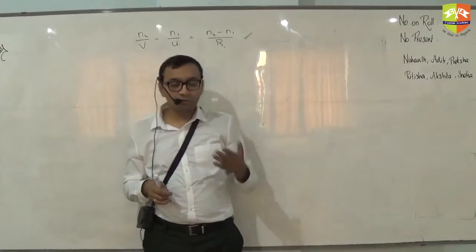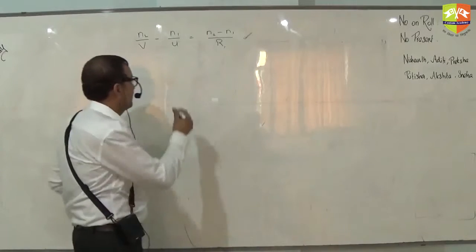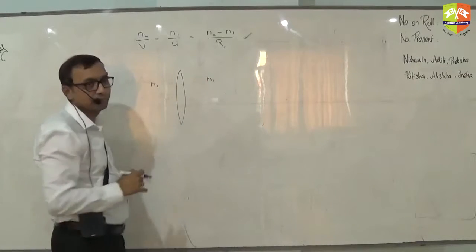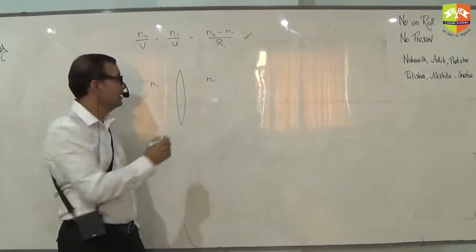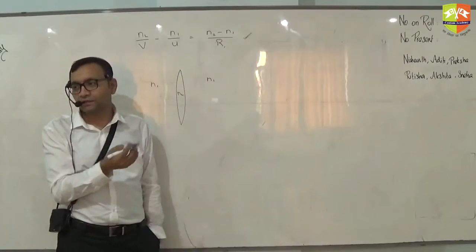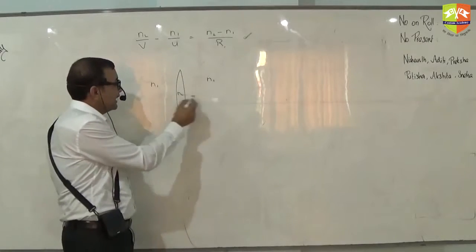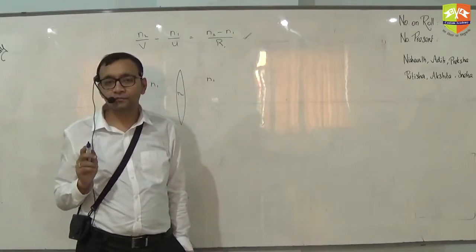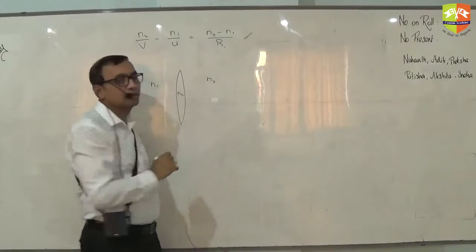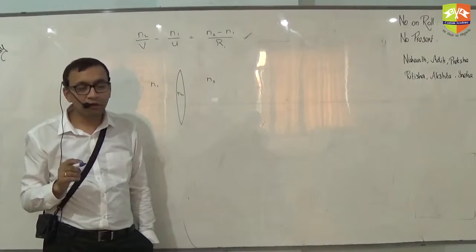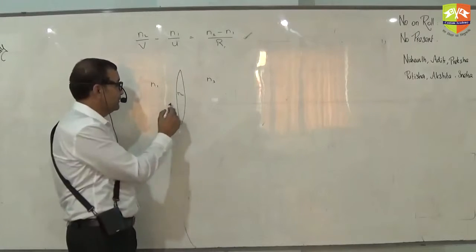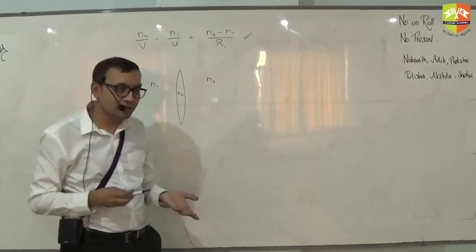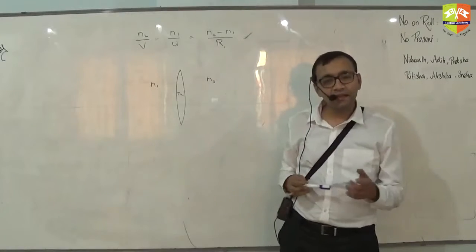When we say lens formula and whatever we are doing with respect to lens, the assumption is this: if there is a lens, the refractive index on this side and that side both are same. That is the assumption, and the refractive index of the glass could be anything, but both sides should have same refractive index. Then only your lens formula which we are going to derive will be valid. Suppose this is n3, then you can't use lens formula. Then what you have to do is use interface formula first between these two interfaces, then between those two interfaces.